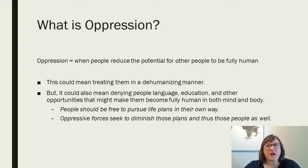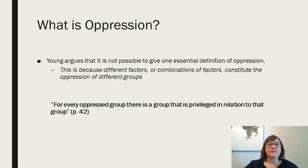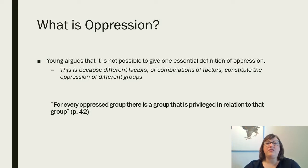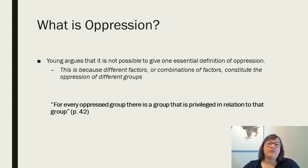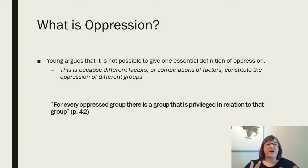Oppression for Young isn't necessarily explicit. She sees it operating in different types of ways. Young argues that it's not possible to give one essential definition of oppression, because different factors or combinations of factors constitute oppression of different groups. For every oppressed group, there is a group that is privileged in relation to that group. This is why her article is called The Five Faces of Oppression — she gives us five ways that interlock and overlap.